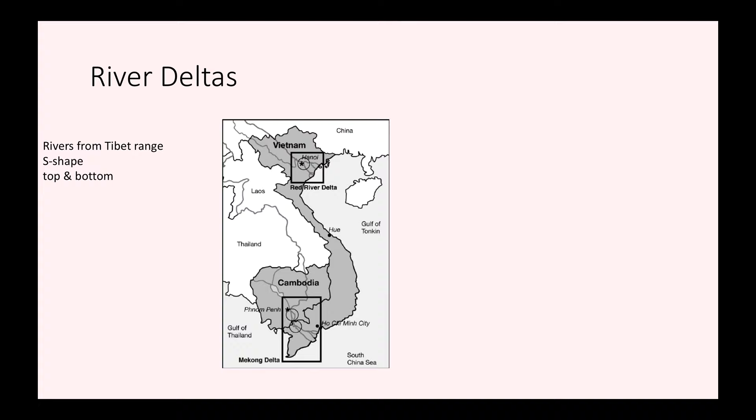One of the most important features of the geography of Vietnam are the river deltas. A delta is when a big river branches out towards the ocean and turns into a lot of small rivers. For example, we can see the Red River Delta up here — the Red River runs down and then it breaks into all these little rivers, that's called a delta. Same thing with the Mekong River: it runs all the way down here then breaks into small little rivers. That's what a delta is.